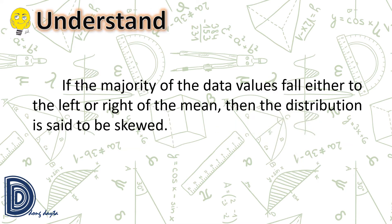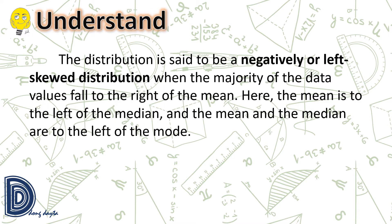If the majority of the data values fall either to the left or right of the mean, then the distribution is said to be skewed. The distribution is said to be a negatively or left-skewed distribution when the majority of the data values fall to the right of the mean. Here, the mean is to the left of the median, and the mean and the median are to the left of the mode.